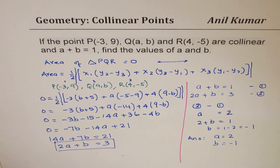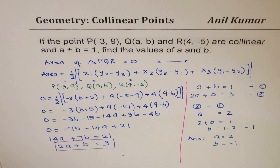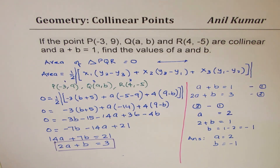So that is how we can solve this question. Collinear points means all the points are in the same line, and therefore even if you form a triangle, its area is going to be 0, and that concept is utilized in solving such questions. Feel free to post your comments and remarks, and if you like and subscribe, that'd be good. Thank you and all the best.